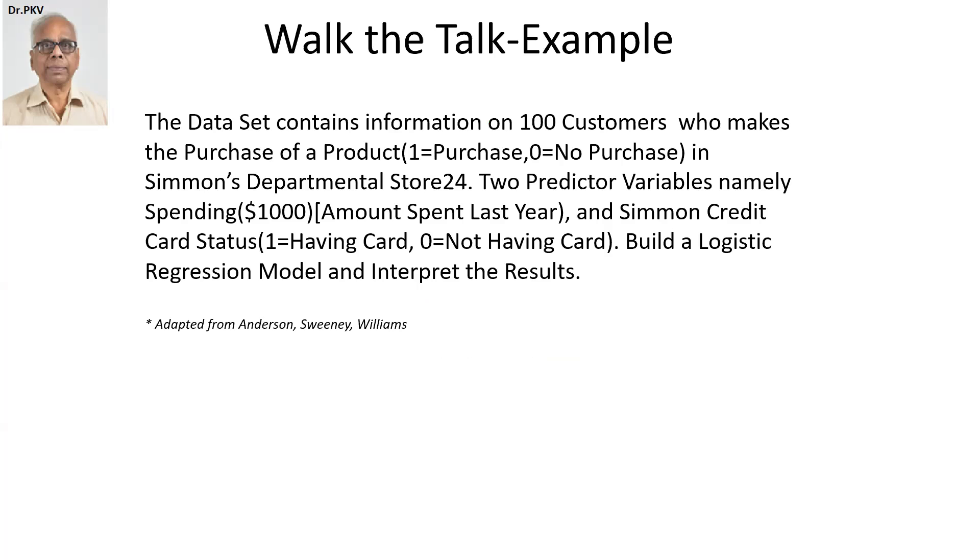The dataset contains information on 100 customers who make the purchase of a product. One equals purchase, zero equals no purchase in Simon's departmental store. Two predictor variables, namely spending in thousand dollars, that is the amount spent last year by each customer,